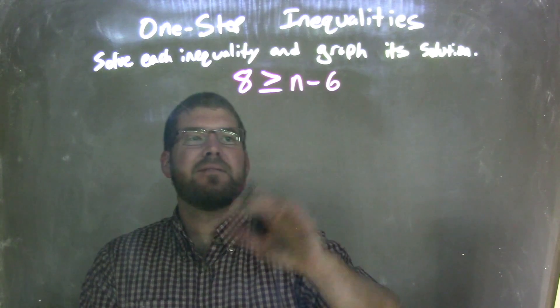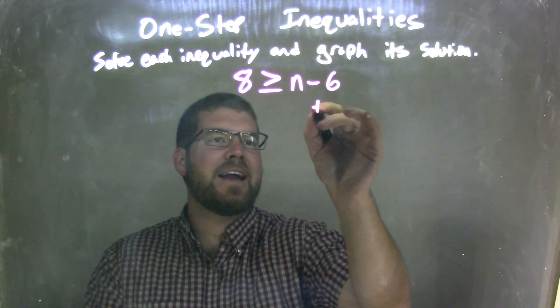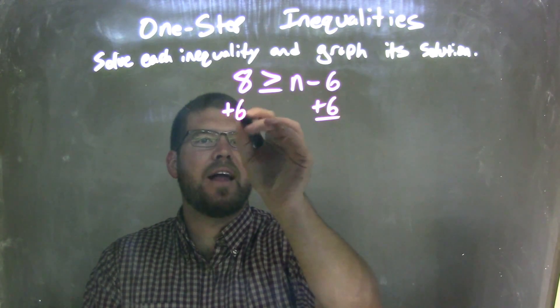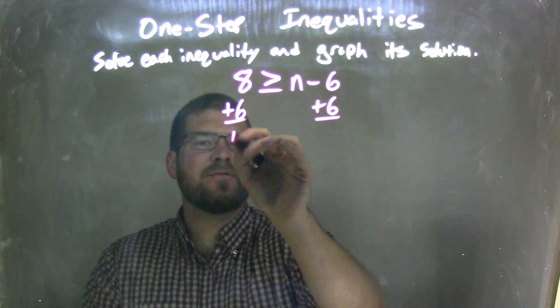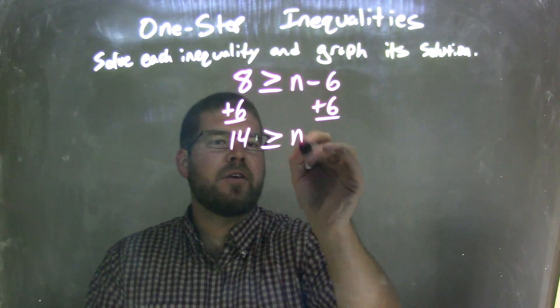My first step is to get the 6 over to the left, so I'm going to add a 6 to both sides. Let's isolate that n. 8 plus 6 is 14.